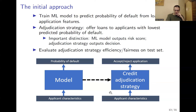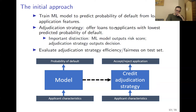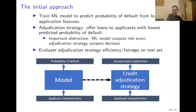So, the interim summary: the goal of this paper is to train a machine learning model to predict the probability that a loan applicant will default from their application features, then convert this into an adjudication strategy that offers loans to applicants with the lowest predicted probability of default. Once we have this credit adjudication strategy, the last step is to evaluate it for efficiency and fairness on the test set.